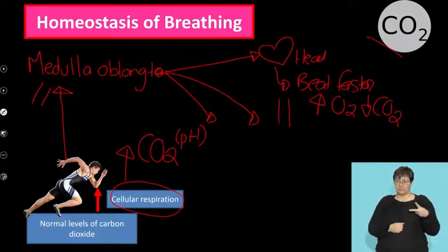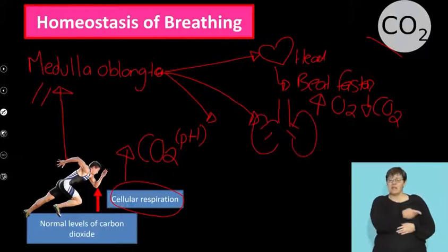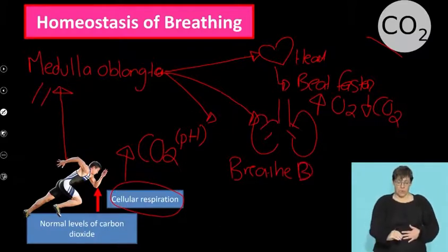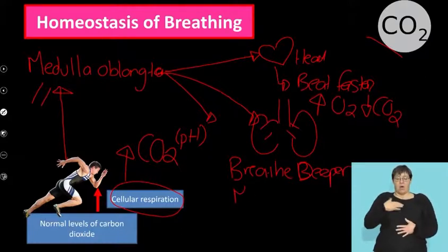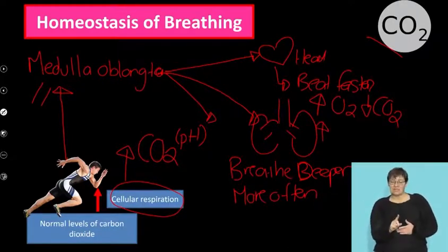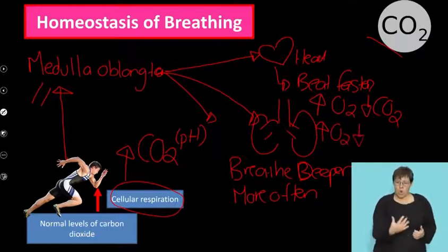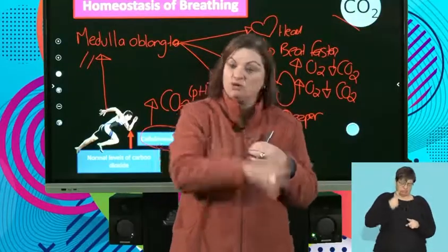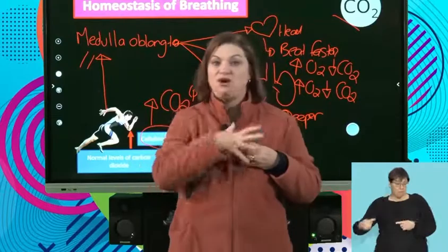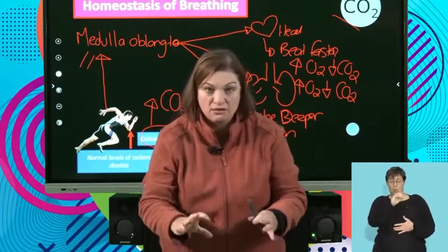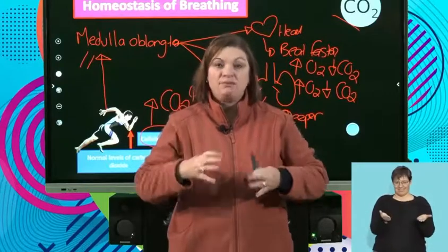The second organ it sends a message to is the lungs. What does it say to the lungs? You must breathe in deeper — big breaths — and you must breathe more often. So if I breathe in deeper and more often, I'm increasing my oxygen intake and getting my carbon dioxide out faster. My heart is beating fast, getting oxygen out there and carbon dioxide back to the lungs; I'm breathing deeper, bringing in more oxygen and expelling more carbon dioxide.